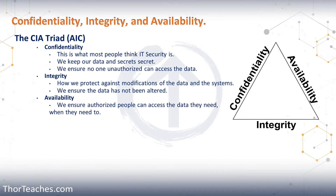If you're taking other courses, you may see it as the AIC triad, but I will trust in your ability to know when I'm talking about the CIA triad versus the Central Intelligence Agency. I will let you know the one time I'm referring to the agency. The CIA triad consists of three things: confidentiality, integrity, and availability.